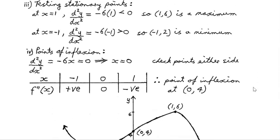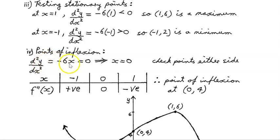For points of inflection, you can locate them with the first derivative, but it's clearer using the second derivative because the sign of the second derivative changes either side of the point. Points of inflection occur when the second derivative — in this case minus 6x — is set equal to 0. The only solution is x equals 0.